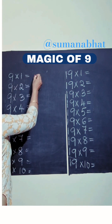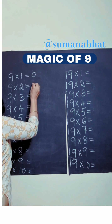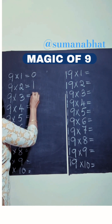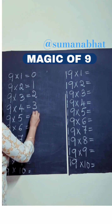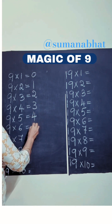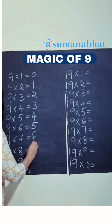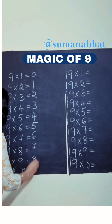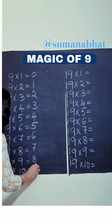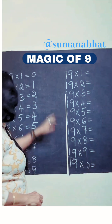For the table of 9, write here the digits in ascending order: 0, 1, 2, 3, 4, 5, 6, 7, 8, and 9.